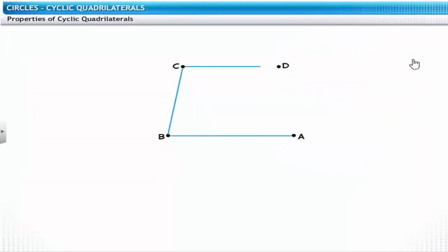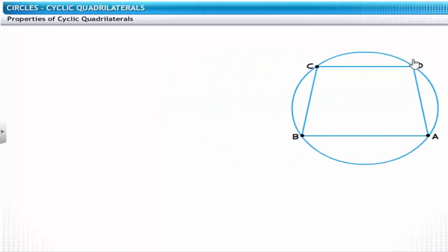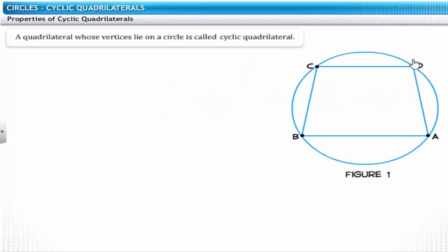What do we get if we join four concyclic points A, B, C and D? We get a quadrilateral ABCD. This quadrilateral is special — all its vertices lie on a circle. A quadrilateral whose vertices lie on a circle is called a cyclic quadrilateral.